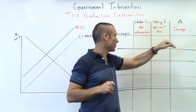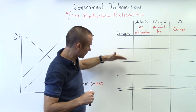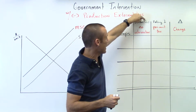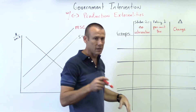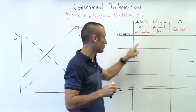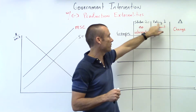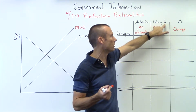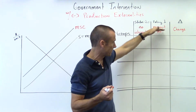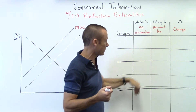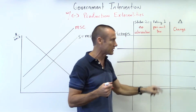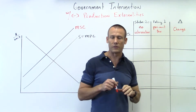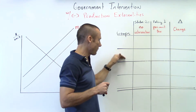I want to go through the columns super quickly. We've got a groups column, a status quo column where we put surpluses when we have no intervention, then we've got a policy alternative — sometimes we just call it policy one — which is a per unit tax coming in. And then we've got the delta column, which is going to show us the changes between the two.